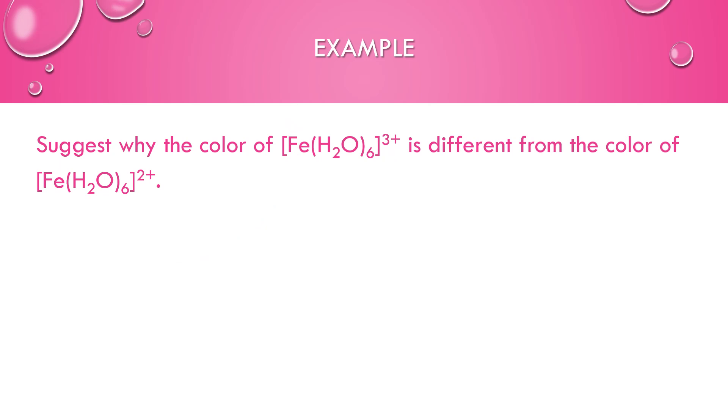And then for this example, we've got two different iron water complexes. Our transition metal has the same identity. Our ligand has the same identity. But in this case, we've got different charges on the complex. And so because water is a neutral ligand, Fe has a plus three oxidation state. And iron here has a plus two oxidation state. So that difference in oxidation state of the transition metal central ion makes it so that there's a different amount of energy required to promote an electron from one part of the d sub-level to the other.